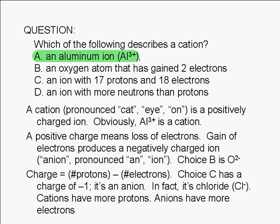In fact, we calculate the charge of an ion from the number of protons and electrons. The charge of an ion is equal to the number of protons minus the number of electrons. So for choice C, the charge is the number of protons, 17, minus the number of electrons, 18, which is equal to negative 1.